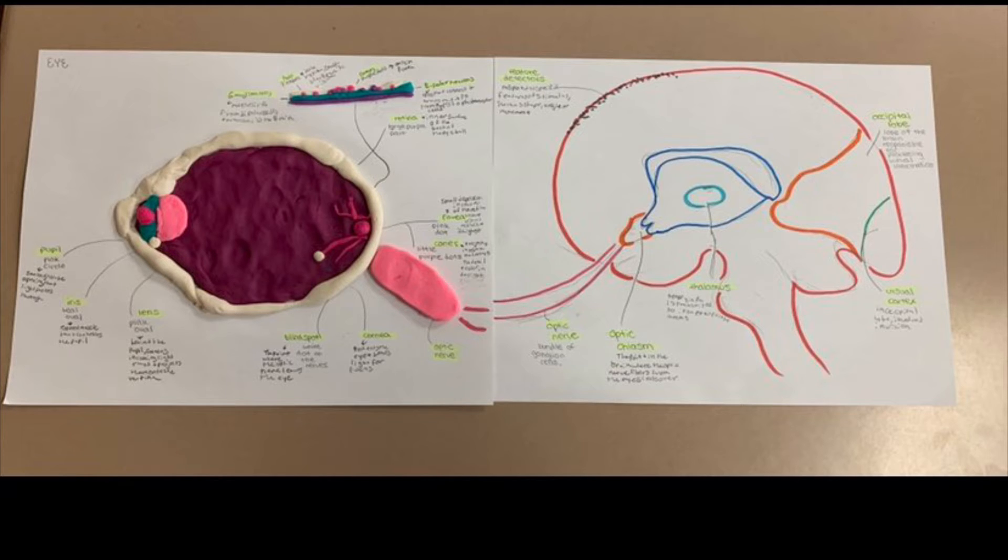Bipolar cells connect and transmit information from the rods and cones to the ganglion cells, which receive the info and transmit it to the brain through the optic nerve. The optic nerve then carries these messages to the thalamus, where it directs the message to the appropriate cortex for processing. The thalamus sends the visual information to the visual cortex located in the occipital lobe.